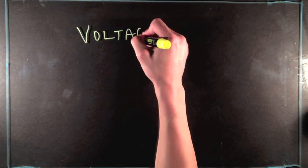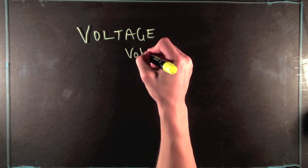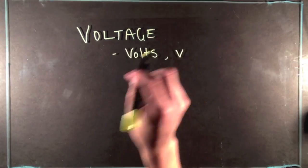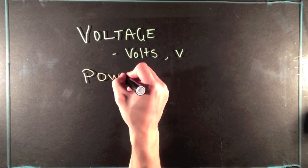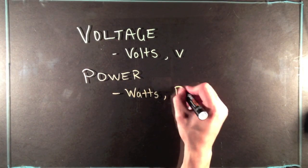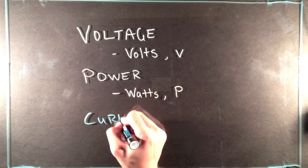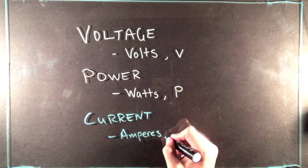Okay, so in today's lesson we're going to take a look at voltage, which is in volts or represented with a V. We're going to take a look at power, which is in watts and represented with a P, and then current, which is in amperes, amps, or represented with an I.